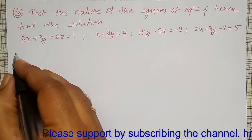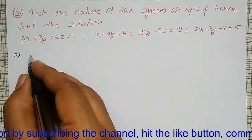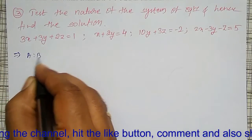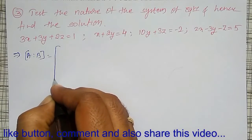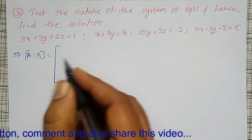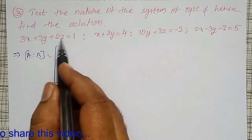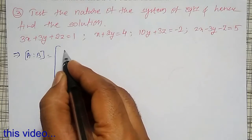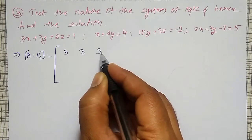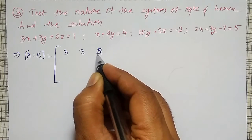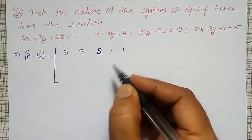How to solve this one? Let me write the augmented matrix for the given system, that is A colon B. I will write the coefficients of X, Y, Z. That is 3, 3, 2, and the right-hand side value for the first equation.